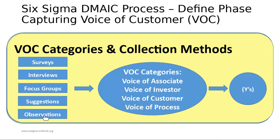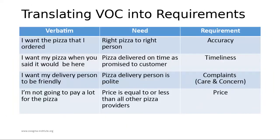You can use electronic platforms to gather this information — like sending a text message to customers to fill a survey about their experience — or meet them in person. The voice of customer categories include: voice of associate (working in the process), voice of investor, voice of customer, and voice of process. To summarize: either an internal customer working in the organization or an external end user benefiting from the process.